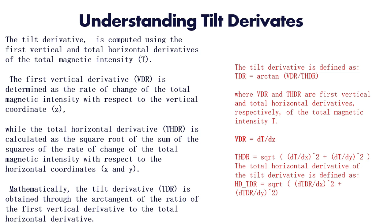The tilt derivative is actually computed using the first vertical derivative and the total horizontal derivative (THDR). It is defined as the rate of change of the total magnetic intensity with respect to the vertical coordinate — that is, the z or depth. The total horizontal derivative THDR is calculated as the square root of the sum of squares of the rate of change of magnetic intensity with respect to x and y. Mathematically, it is obtained through the arctangent of the ratio of the first vertical derivative to the total horizontal derivative.